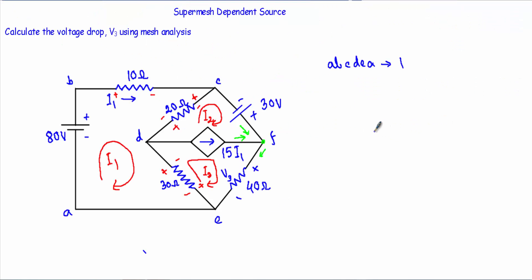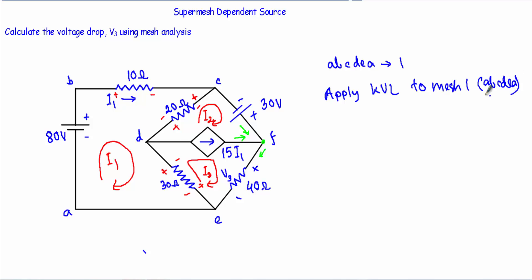After applying KVL to the super mesh, I will apply KVL to the remaining mesh — mesh number one. Mesh 1 is the A-B-C-D-E-A loop. First I encounter the 80 volt source and its negative terminal, therefore its voltage will be positive — plus 80. After that I encounter this 10 ohm resistor and its positive terminal, therefore its voltage will be negative — minus 10·I1.